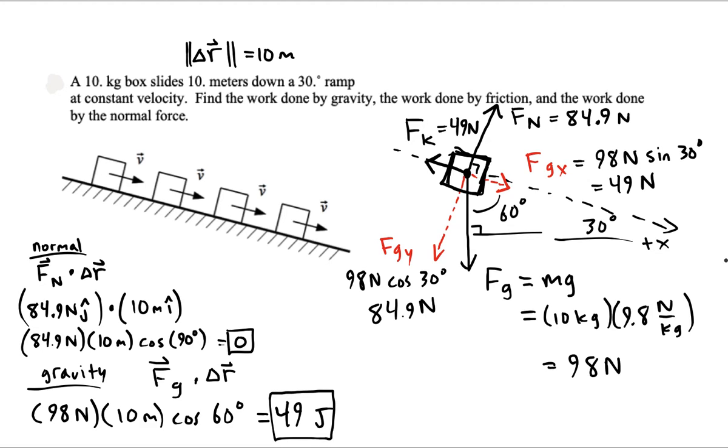All right now let's find out what the work is that's done by friction. Friction is going to be Fk dotted with Δr. So we want the magnitude of friction which we said was 49 newtons, 10 meters of displacement.